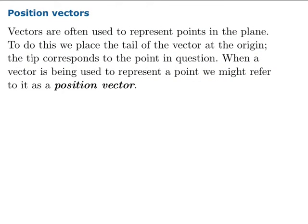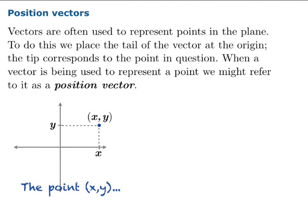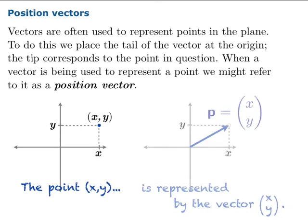There's a very easy idea of using vectors to represent points in the plane. If you have a point in mind, you can use a vector by taking the tail and setting it at the origin so that the tip lands on the point in question. When you use a vector this way, you might refer to it as a position vector, which indicates points in the plane by putting the tails at the origin.